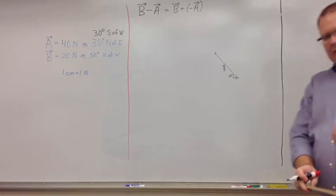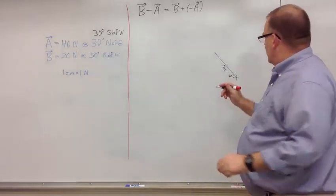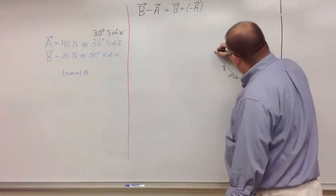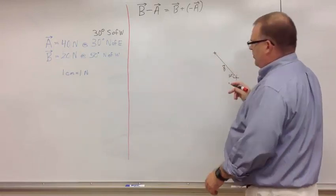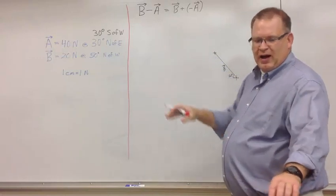Now, again, like we did with A plus B, we're going to draw our little axis right here at the end. And from that point, we're going to go 30 degrees south of west.